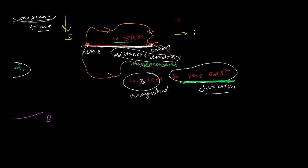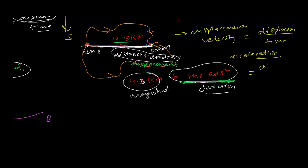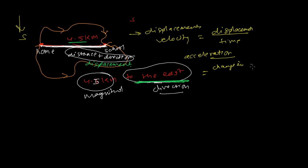For vector quantity examples: displacement is a vector quantity, as we discussed. Similarly, velocity — velocity is how much displacement you're making over how much time. Since displacement is a vector quantity with direction, velocity is also a vector quantity with direction. Acceleration is also a vector quantity — it's the rate of change of velocity, i.e., change in velocity divided by the time taken to change that velocity. There are many more examples we'll discuss later.